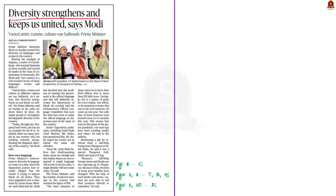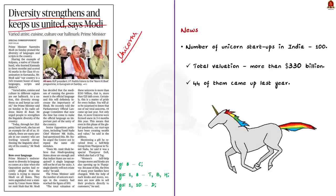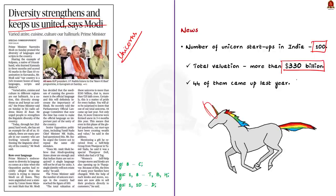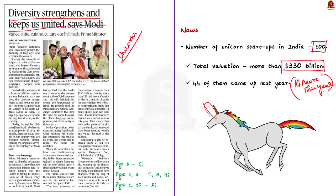The next article mentions certain statements made by the Prime Minister about unicorns. Here we are not talking about the mythical creature but about startup companies. The Prime Minister noted that the number of unicorn startups in India has reached 100, with a total valuation of more than 330 billion dollars — that is more than 25 lakh crore rupees. Out of these 100 unicorns, 44 came up just last year, and 14 more are expected this year.